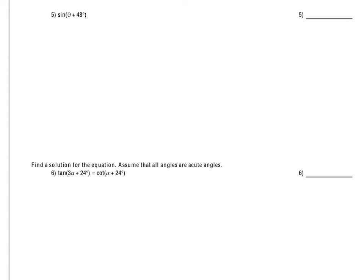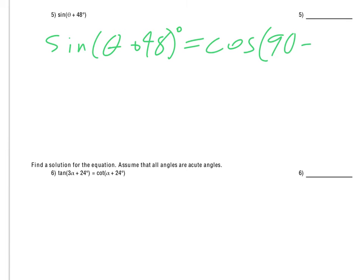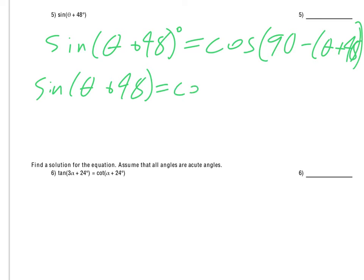For number 5, it's set up a little differently — instead of sine of an angle, we have sine of theta plus 48 degrees. We still apply the co-function cosine and still do 90 minus, but then we have the theta plus 48. So really we're taking the 48 away from the 90 and we end up with a negative theta. So sine of theta plus 48 equals cosine of 32 minus theta.